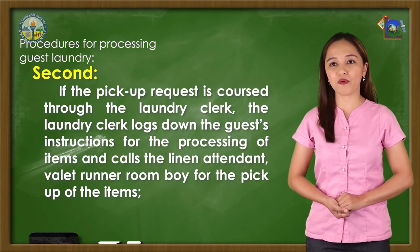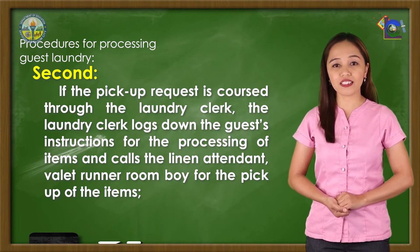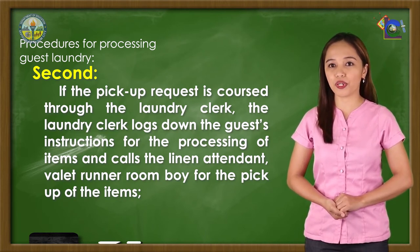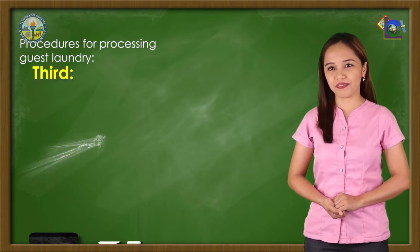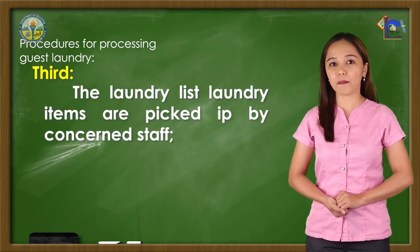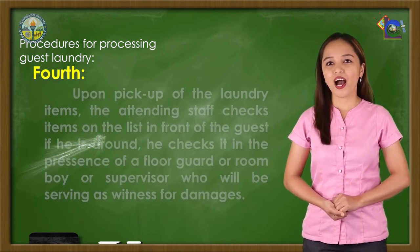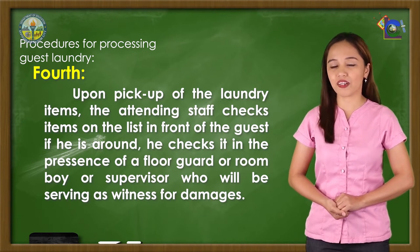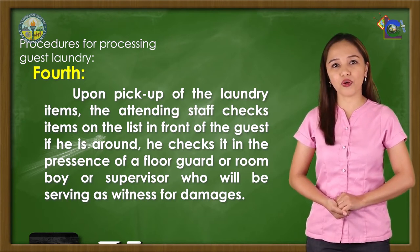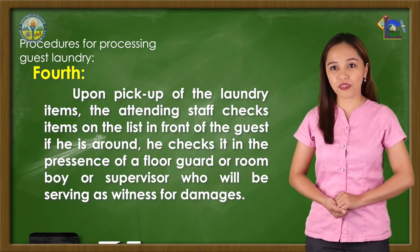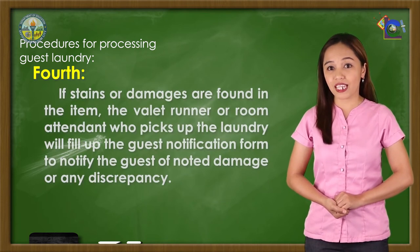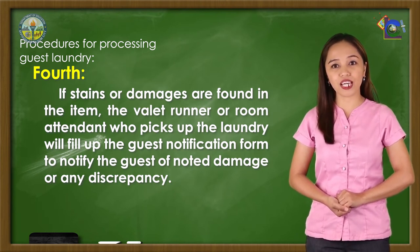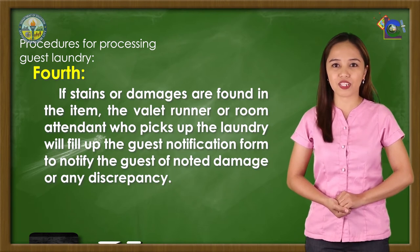Second, if the pick-up request is routed through the laundry clerk, the laundry clerk logs down the guest instructions for processing of items and calls the linen attendant, valet runner, or room boy for the pick up of the items. Third, the laundry list and laundry items are picked up by the concerned staff. Fourth, upon pick up of the laundry items, the attending staff checks items on the list in front of the guest if he is around, or in the presence of a floor guard, room boy, or supervisor who will serve as a witness for damages. Stains or damage found on the item are noted.